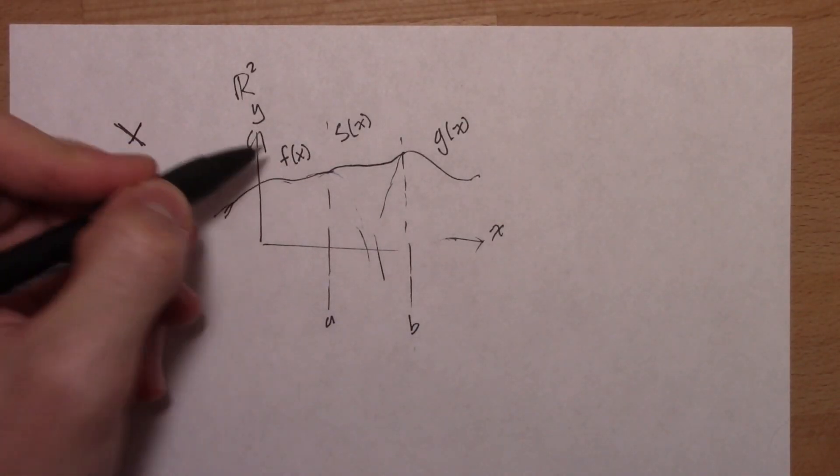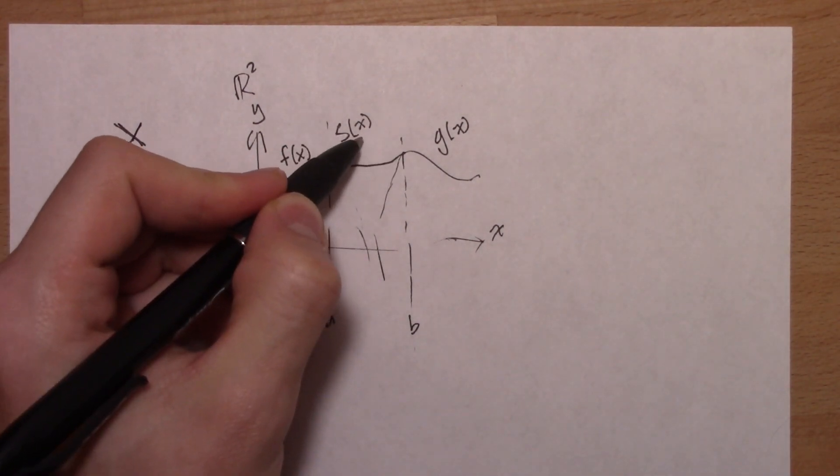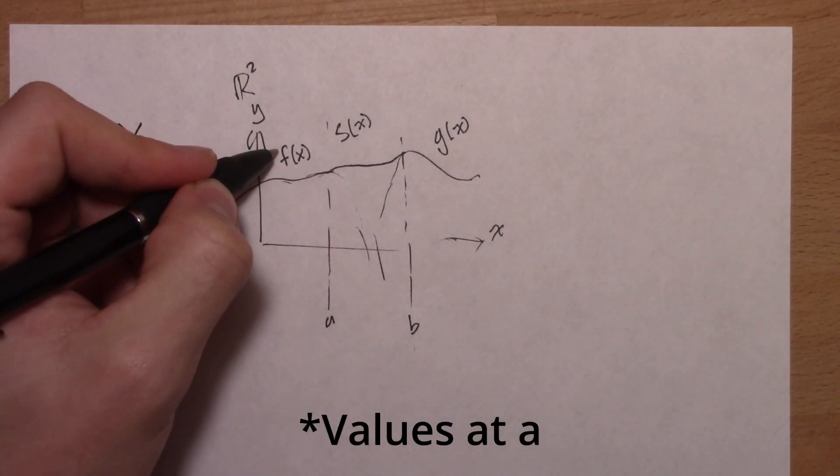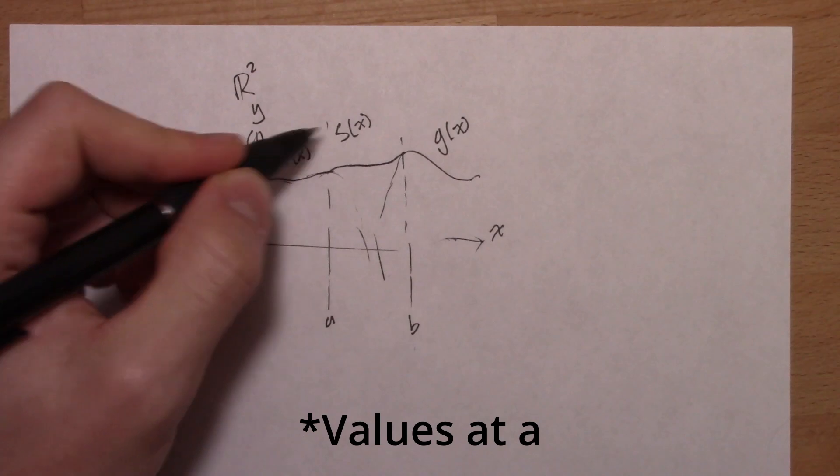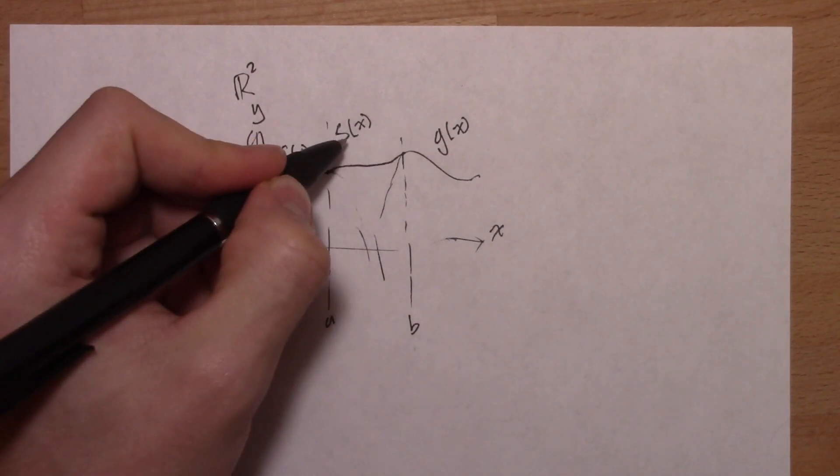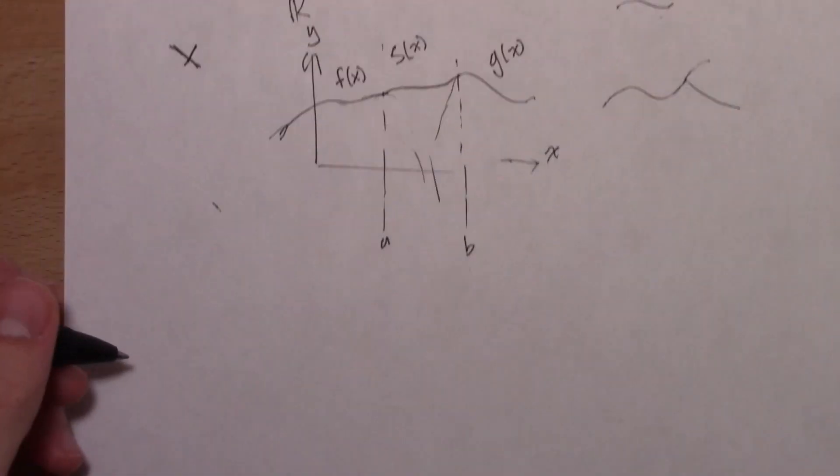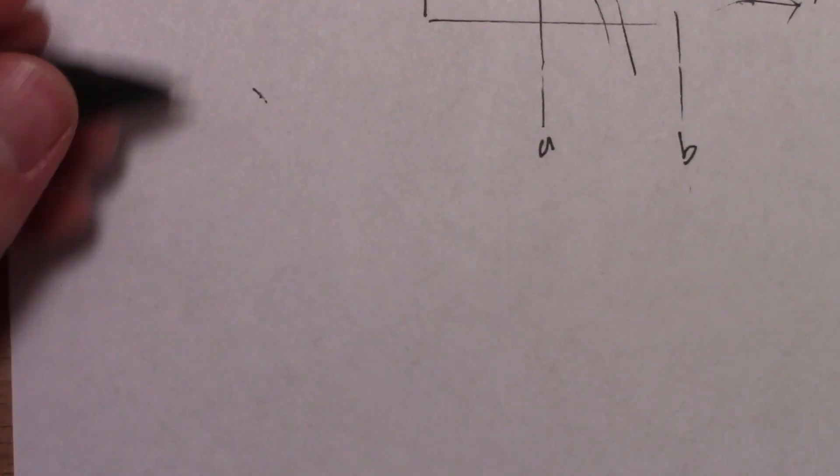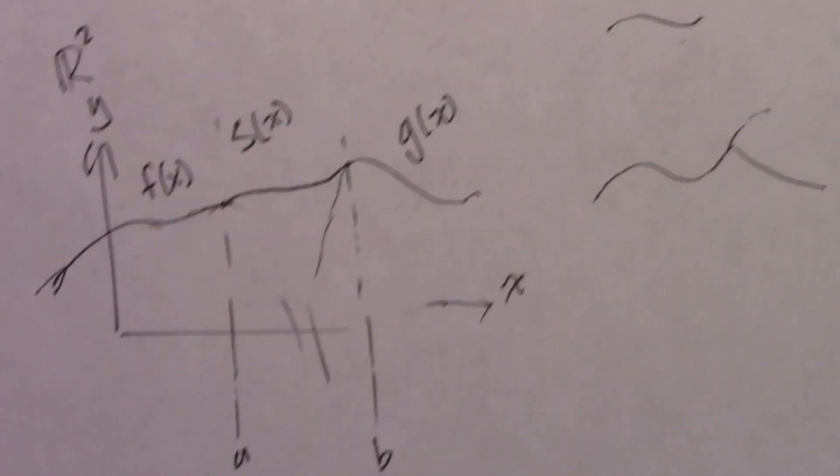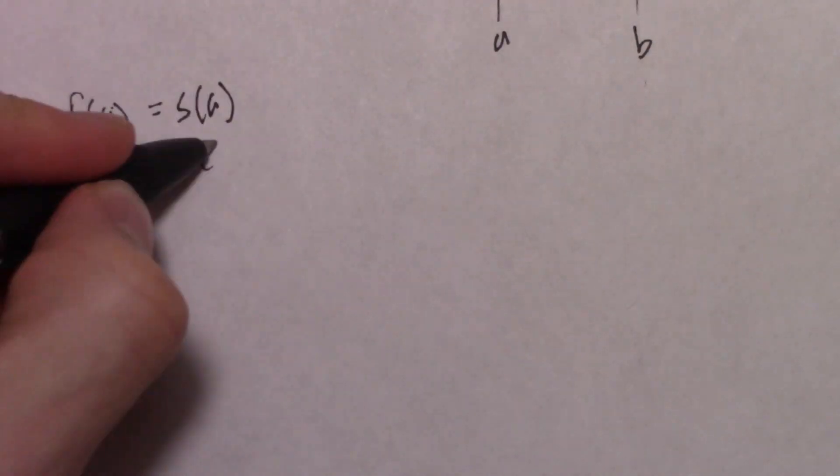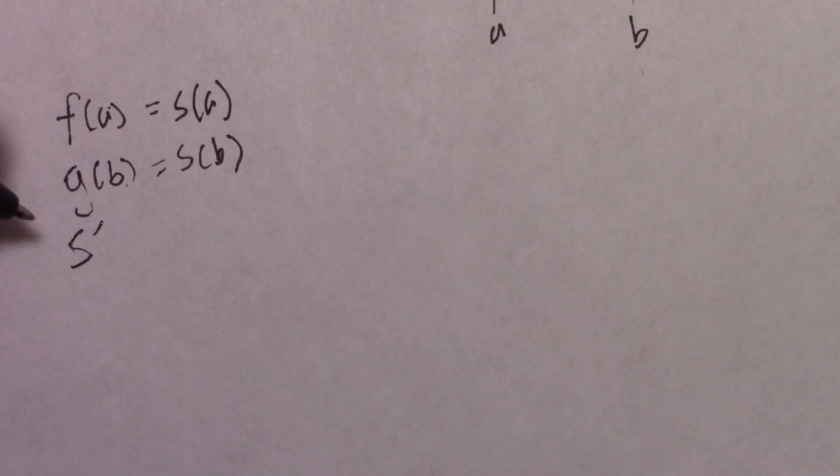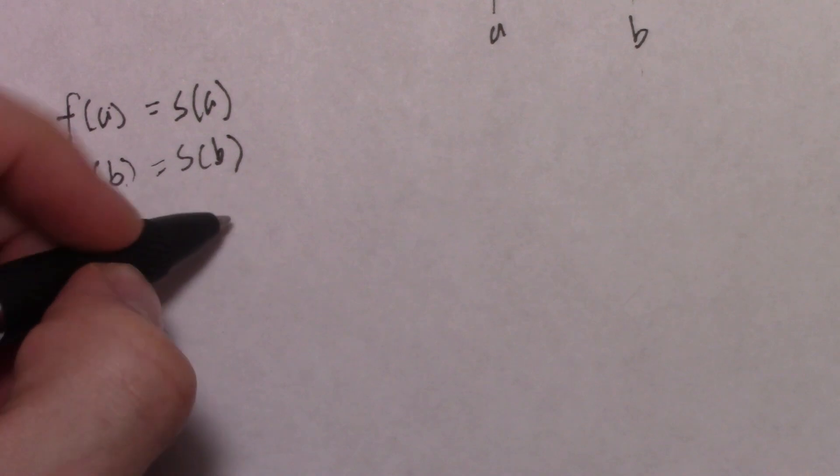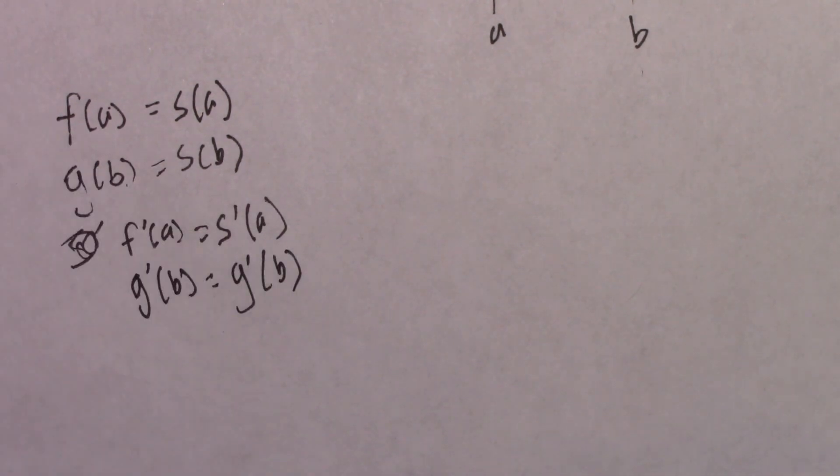Well, we want a smooth connection between the functions, but what do I mean by smooth? In this case, I mean the values at b for s, f, and s are the same, as well as s and g, and the slope is the same. Let's start writing down some constraints.